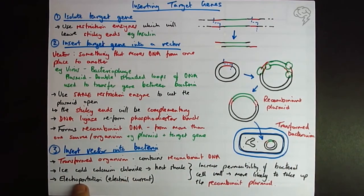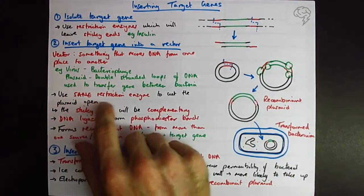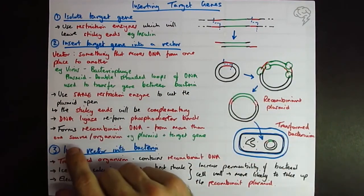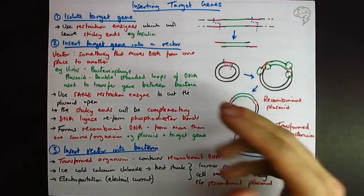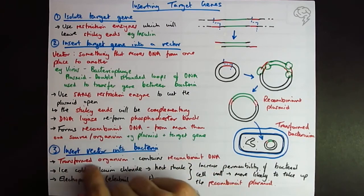So these key terms are really going to come up time and time again. These techniques, I imagine electroporation, because it's new, is most likely to be asked. But you're increasing their chance of going in by increasing the permeability. Most importantly, you've got to use the same restriction enzyme for isolating the target gene and cutting open your plasmid. DNA ligase seals it all up again. Recombinant DNA is DNA that contains DNA from more than one source, such as more than one organism. And transformed organisms contain recombinant DNA.